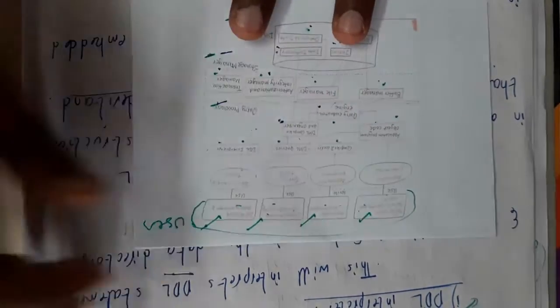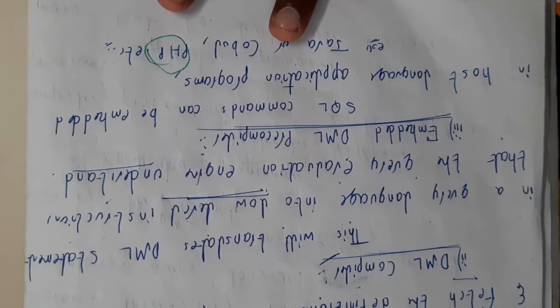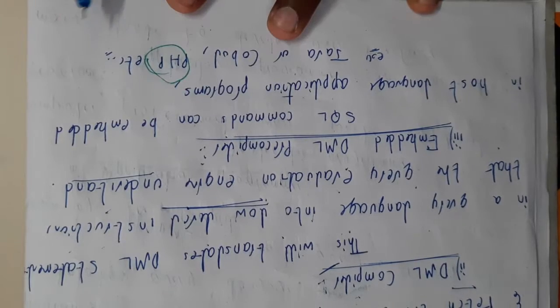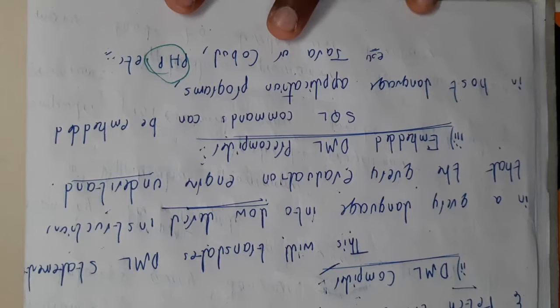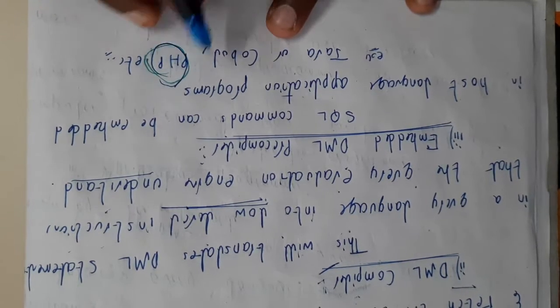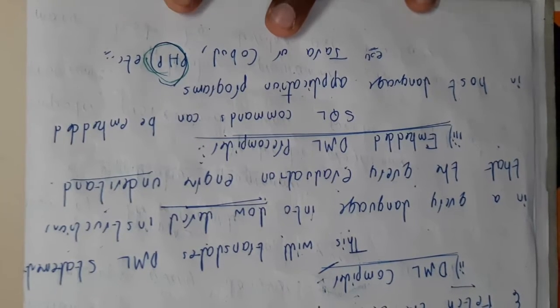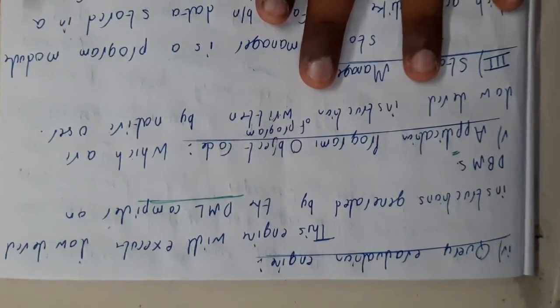The engine can understand only machine language or lower-level language, which is the reason why we use the compiler. We are also having an embedded DML pre-compiler — whenever you are trying to embed another language like SQL into some other language like PHP, it is used for web designing: PHP plus SQL to retrieve data from your database in web designing. That is how the embedded DML pre-compiler is used.